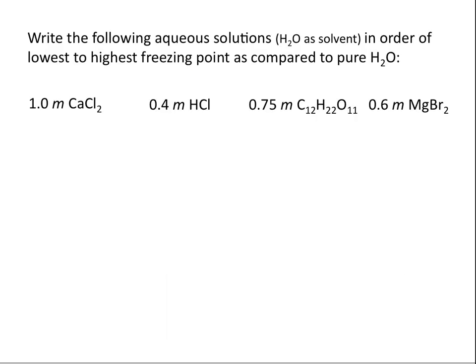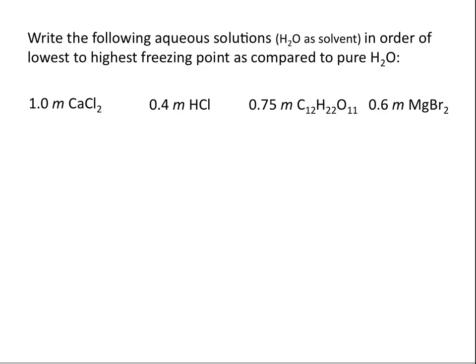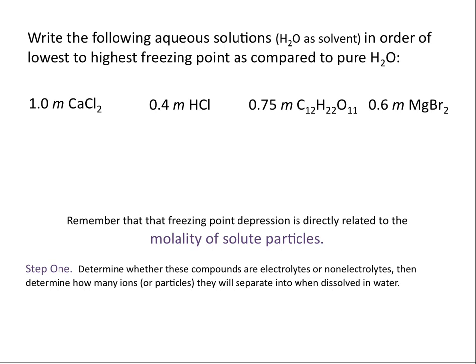Before we do some calculations, let's look at an example where we try to determine which of these solutions would have the lowest freezing point. Remember, the freezing point is dependent on the molality of the solute particles. Anytime you have an ionic compound — or a compound that will completely ionize in water — those molecules will dissolve to give different numbers of ions, and each ion counts as a separate particle. So you need to look at the molal concentration of the particles you get when that solute dissolves, not just the molal concentration of the solute itself.